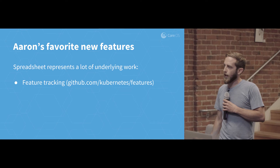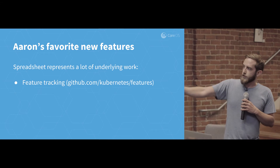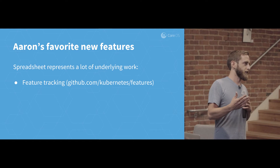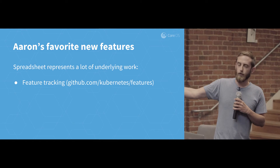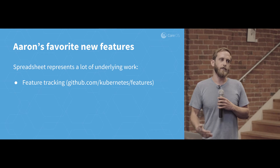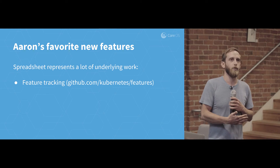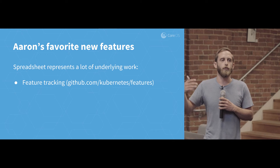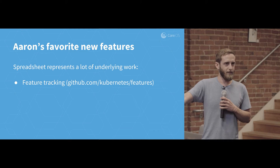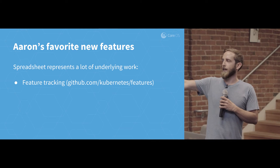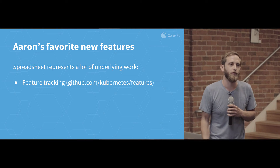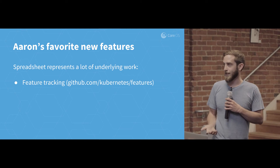Some of that was the feature tracking itself. Under the Kubernetes organization there's a repository called Features where they're now being really pragmatic about tracking the feature lifecycle — from prior to there being an actual proposal, through the proposal, through code, through documentation, through its lifecycle of alpha, beta, and stable. I think this is a really important thing and it's worked really well in the 1.4 release because now we can surface all of these things in a really clean, simple way.